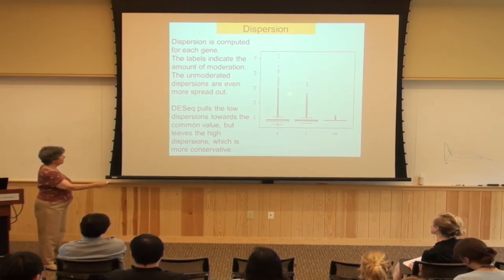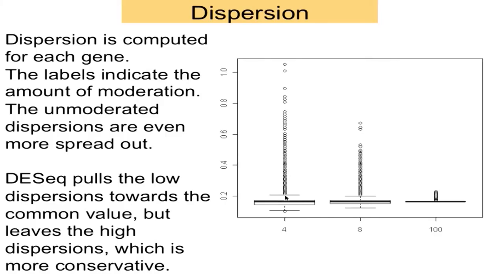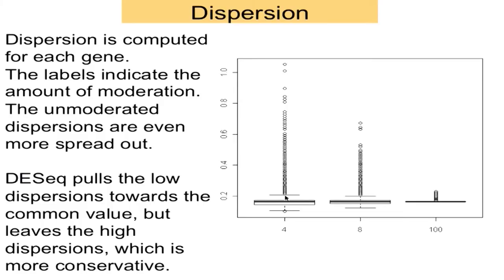EdgeR uses a direct method based on a prior. DESeq does something similar except the weird thing is it pulls the bottom up but doesn't pull the top down. My observation — though I can't really validate it — is that up in the high-dispersion range, there are some truly differentially expressed genes with lots of power and information, but DESeq doesn't find them because it's using these enormous dispersions. Really, biology should tell you what's going on.